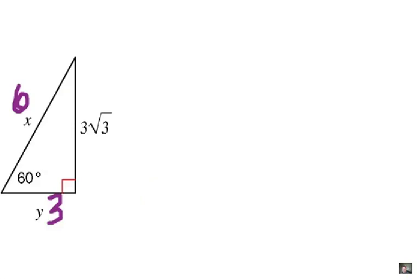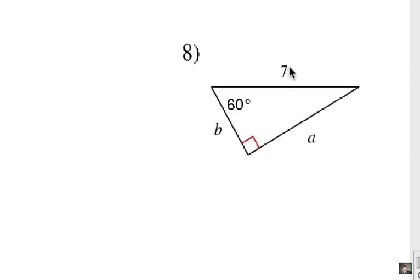Alright, number 8. Here, the hypotenuse is 7. So take half of it to get the short leg, so it must be 3.5. And then the longer leg, A, must be 3.5 radical 3. Alright, simple as that.